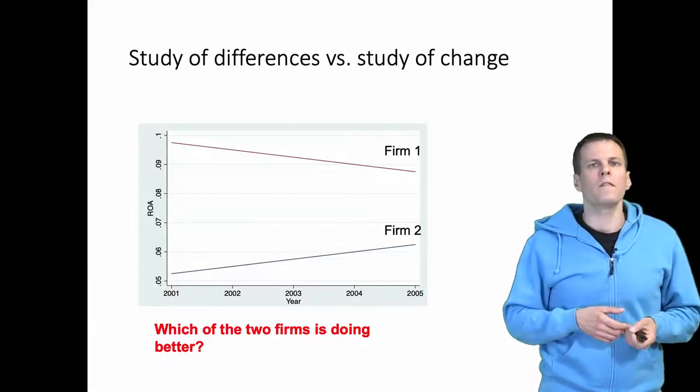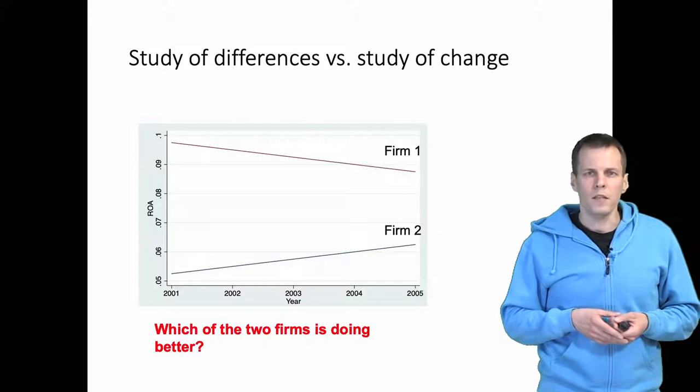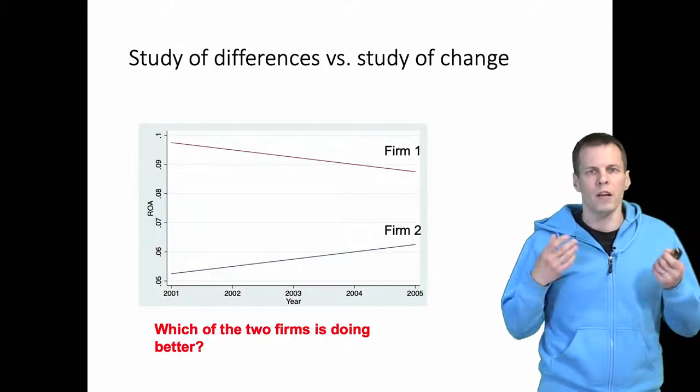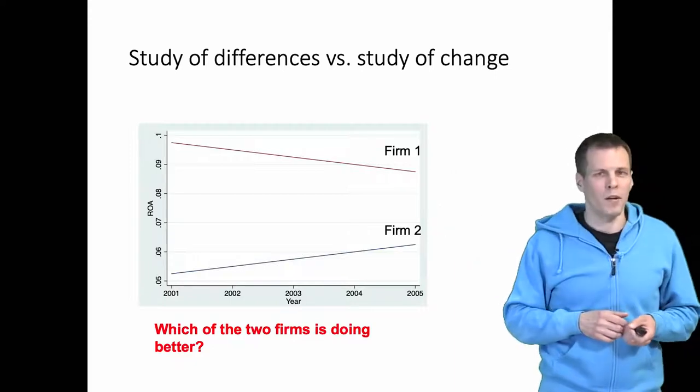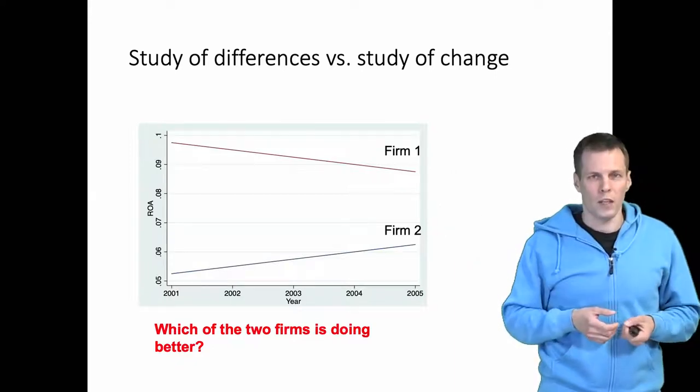For example, if the question was which of these firms would have been a better investment in the last five years, then firm 1 would have been a lot better because they are more profitable on average.